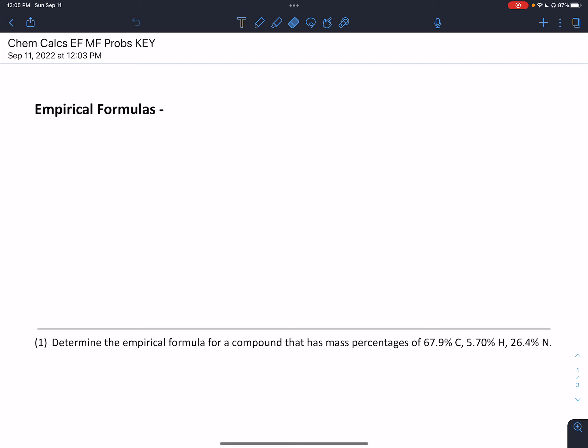Empirical formulas can be defined as the smallest whole number ratio of all elements within a compound.